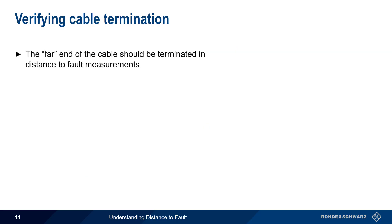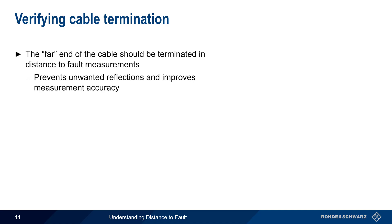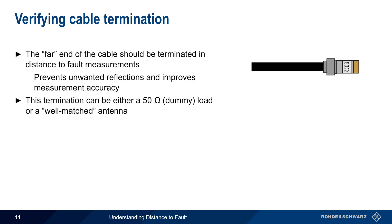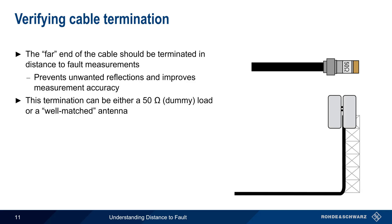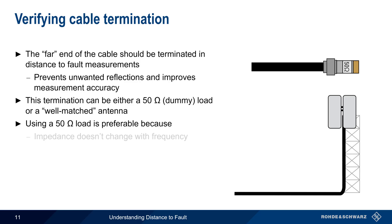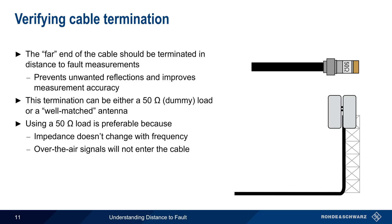The far end of a cable in distance to fault measurements should be terminated whenever possible. This prevents the unwanted reflections that would be caused by an open at the end of the cable, and it also improves measurement accuracy. This termination can be either a resistive 50 ohm load or dummy load, or a well-matched antenna that absorbs most of the power over the test frequency range. A resistive load is always preferable: it will not change its impedance when the test frequency is swept, it minimizes pick-up of over-the-air signals by the antenna, and it prevents the DTF test signal from being radiated by the antenna, potentially creating interference to nearby spectrum users.